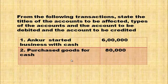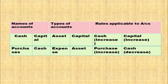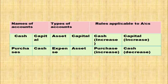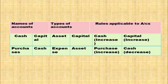Second transaction: Purchased goods for cash Rs. 80,000. Affected accounts: purchases account and cash account. Purchases is an expense and cash is an asset. Purchases being an expense — when expense is increased, it is debited. So, purchases account is debited. Cash being an asset is going from the business, so cash is decreasing — when asset is decreasing, it will be credited. Purchases account debited and cash account credited.